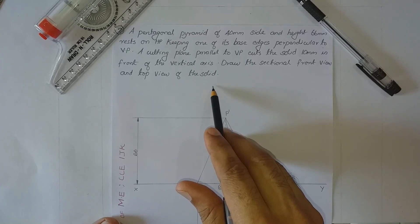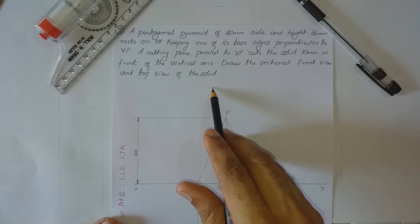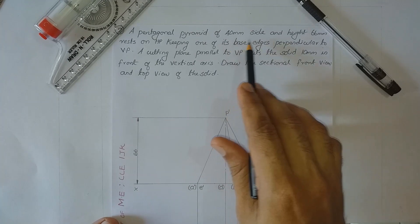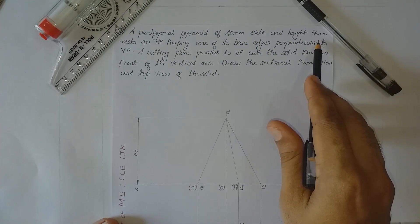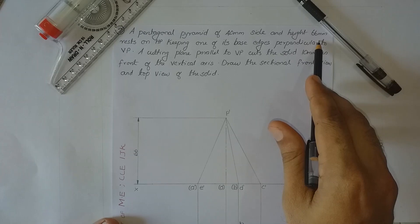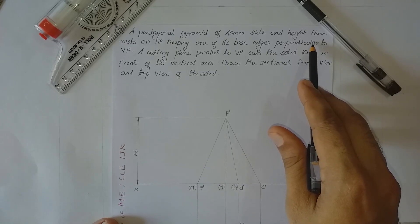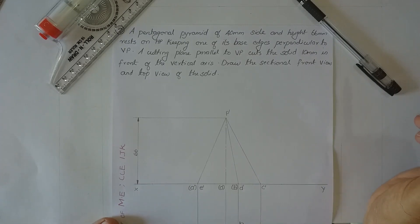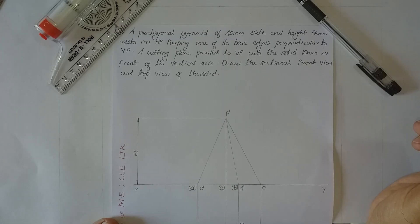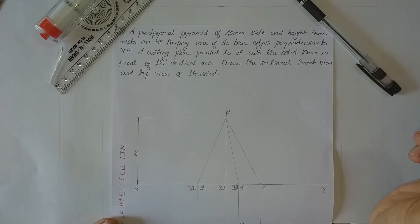This problem involves a pentagonal pyramid of 40mm side and height 66mm, resting on the horizontal plane with one of the base edges perpendicular to VP — that is, perpendicular to the XY line in the top view. As this involves a sectioning process, the very first step is to draw the symbolic front view and symbolic top view of the solid using type B lines, that is, continuous thin lines.